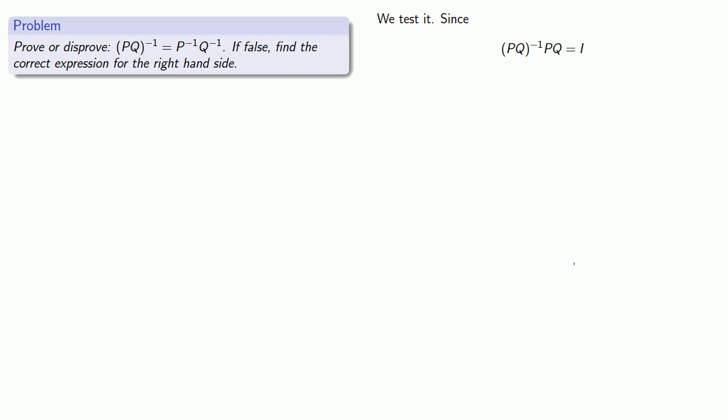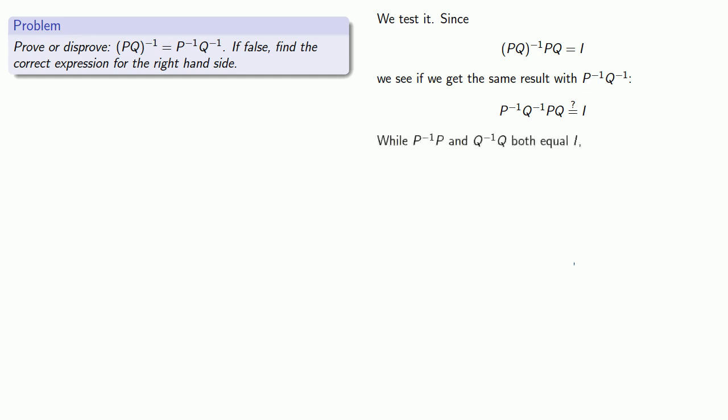Paper is cheap, so let's set down the equation — but let's not commit to equality yet, so we'll write a question mark above the equal symbol. Staring at this equation, we realize we have a problem. We know that P inverse times P, and Q inverse times Q, are both equal to the identity matrix. However, in general, matrix multiplication is not commutative, so there's no way to bring P inverse and P together, or Q inverse and Q together. There's no way to make these factors equal to the identity, so we must conclude that the statement is false.